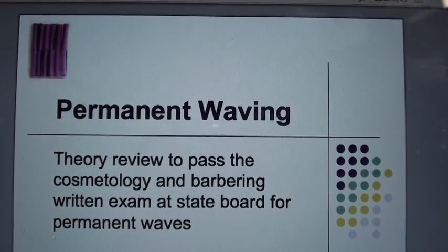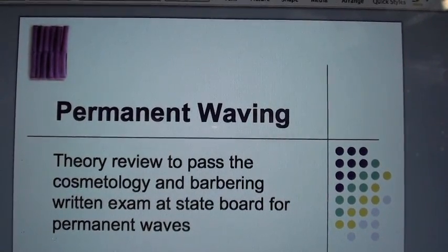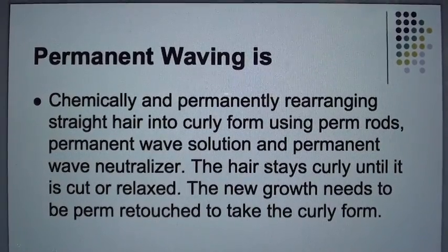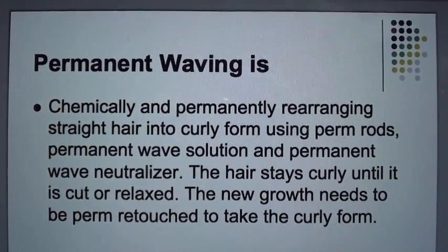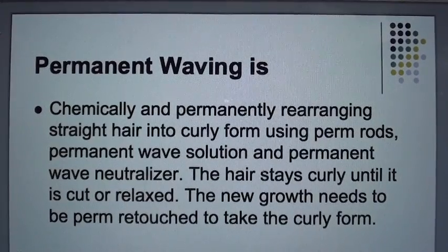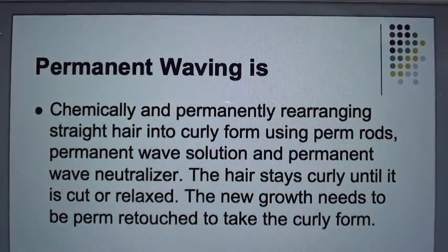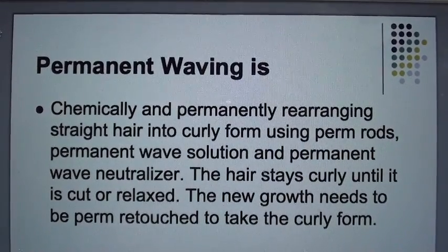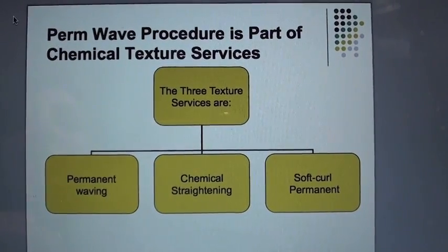Permanent Waving Theory Review to pass the cosmetology and barbering written exam — State Board for Permanent Waves. Permanent waving is chemically and permanently rearranging straight hair into curly form using perm rods, permanent wave solution, and permanent wave neutralizer. The hair stays curly until it is cut or relaxed. The new growth needs to be perm retouched to take the curly form. Perm wave procedure is part of chemical texture services.